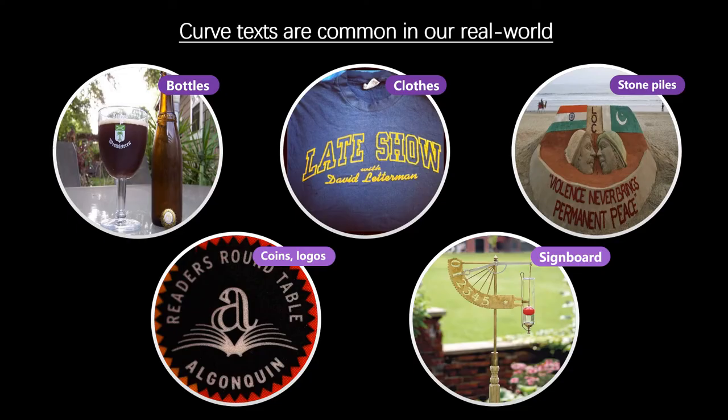Curved text is very common in the real world. For example, text in curved objects such as buckets and bottles, crosses, ribbons, signs, coins, and logos.